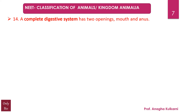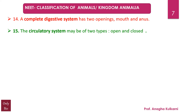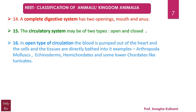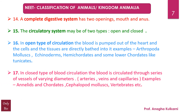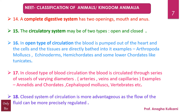Point number 14: A complete digestive system has two openings, namely mouth and anus. The circulatory system may be of two types: open circulatory system and closed circulatory system. In the open type of circulation, blood is pumped out of the heart and the cells and tissues are directly bathed in it. In the closed type of circulation, blood is circulated through a series of vessels of varying diameters — arteries, veins and capillaries. Examples: annelids, chordates, cephalopod molluscs, vertebrates, etc. The closed system of circulation is more advantageous as the flow of fluid can be more precisely regulated.